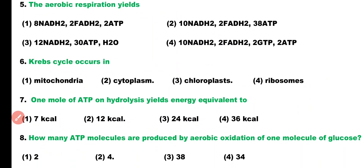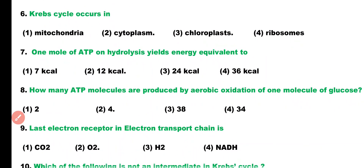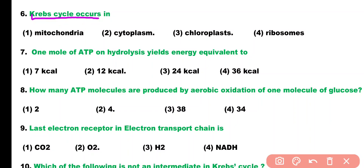Question number 6. The Krebs cycle occurs in: mitochondria, cytoplasm, chloroplast, or ribosome. Correct answer is option 1. The Krebs cycle takes place in the mitochondrial matrix.